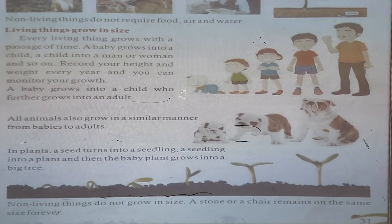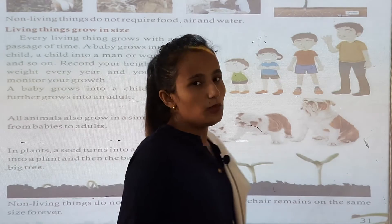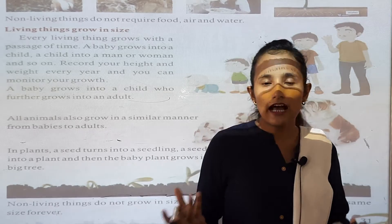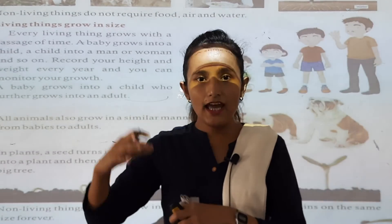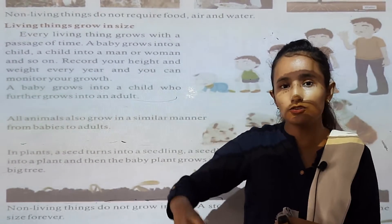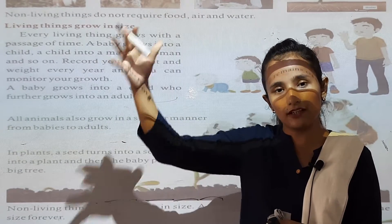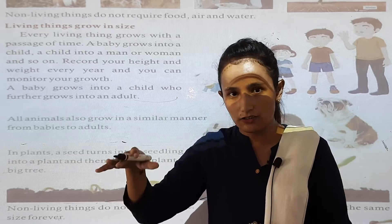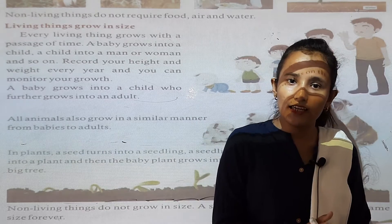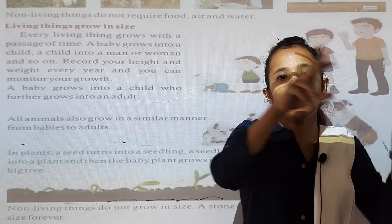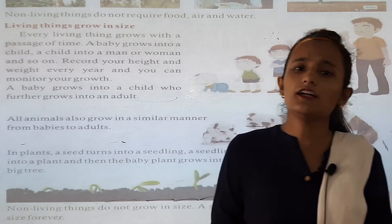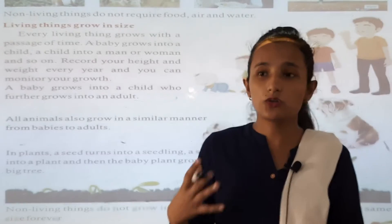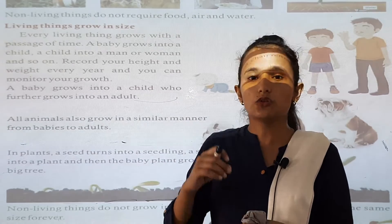Record your height and weight every year and you can monitor your growth. Every year you celebrate your birthday because your age is growing, you are going higher, your growth is increasing. From one year to two years, three years, four years, five years, six years — every year you celebrate your birthday because you are growing bigger.